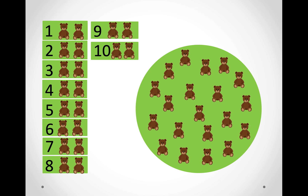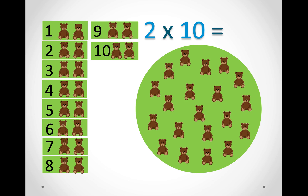In this picture there are ten groups and in each group there are two teddy bears. So we can say two times ten. Let's count in twos to find out: two, four, six, eight, ten, twelve, fourteen, sixteen, eighteen, twenty. So two times ten equals twenty.